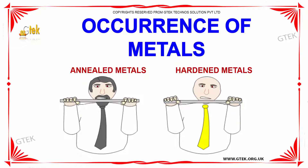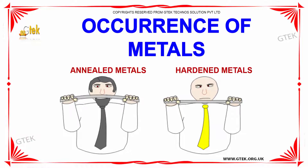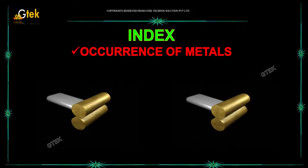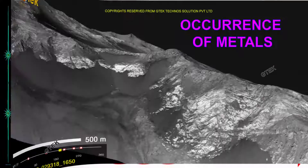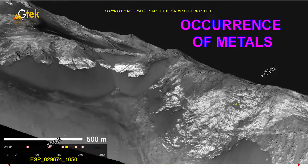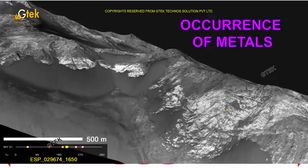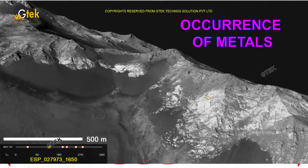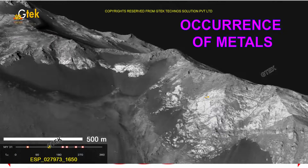This is about the occurrence of metals. The metal occurs in the earth's crust — it's in nature in different formats, and we need to extract the metal from the ores.